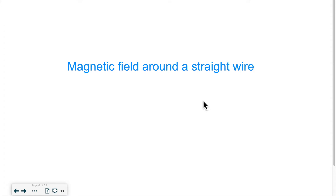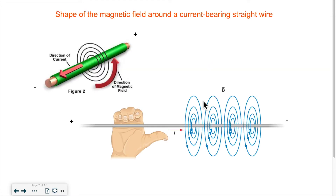Hello everyone! Welcome back for another lesson. In this lesson we will be looking at the magnetic field that gets created around a wire while electricity is flowing through. As I just stated, when electricity goes through a wire there is a magnetic field that gets generated. So what does it look like?